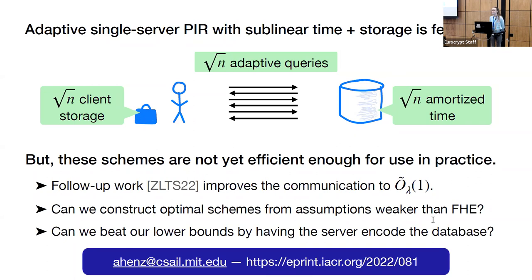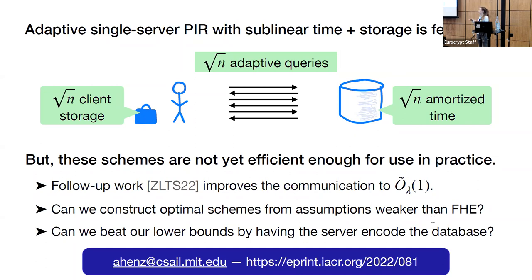Question: in your work, the database has to be static — if the database is changing, how does that change things? As noted in our schemes, the client retrieves a hint about the database contents, so if the database changes, the hint becomes outdated. Some prior work has shown that if the database changes, you can build on older work on dynamic databases to handle updates gracefully if there aren't too many of them. Specifically, if only a constant number of records change, you can do this without additional overhead. However, if the whole database changes, we need to run the scheme again from scratch.